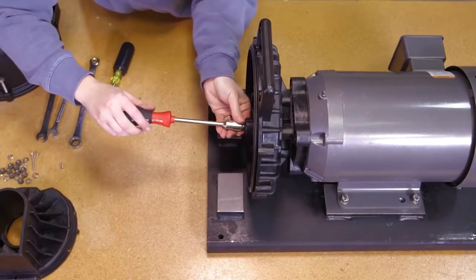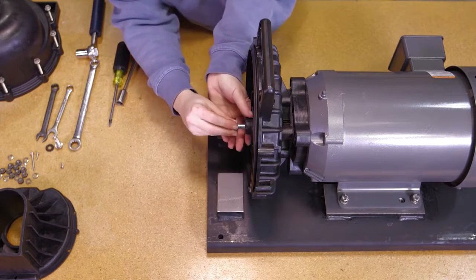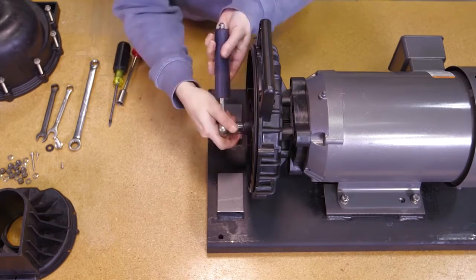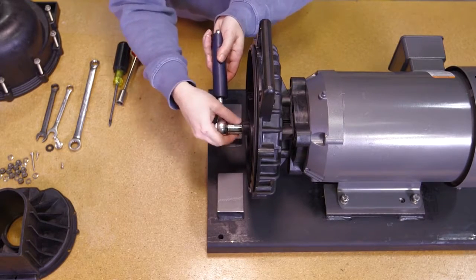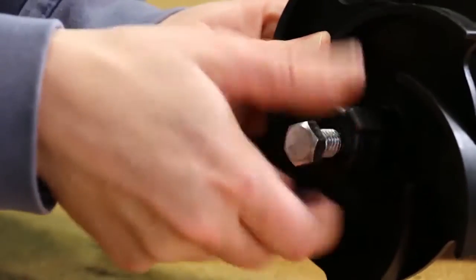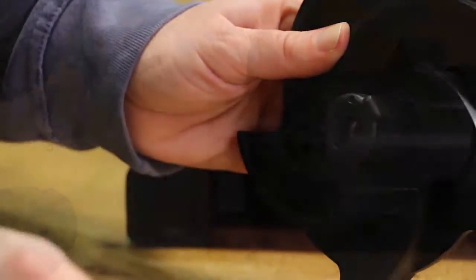Remove the impeller bolt and gasket from the impeller. Screw a 7/16ths to 14ths hex head cap screw into the impeller snout. As the bolt is tightened, the impeller will be pried off of the shaft of the drive unit. Remove the 7/16ths to 14ths screw once the impeller has been removed from the drive unit.